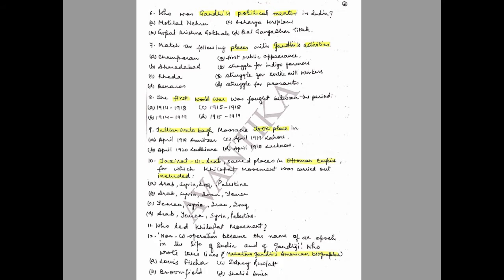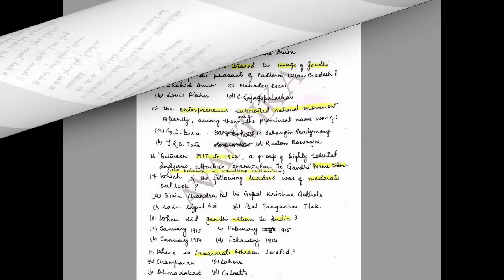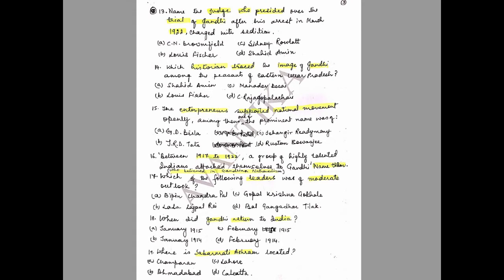Question 12: 'Non-cooperation became the name of an epoch in the life of India and of Gandhi.' Who wrote these lines — Gandhi's American biographer? Options: A) Louis Fisher, B) Broomfield, C) Sydney Rowlatt, D) Shahid Amin. Question 13: Name the judge who presided over the trial of Gandhi after his arrest in March 1922 when charged with sedition. Options: A) C.N. Broomfield, B) Louis Fisher, C) Sydney Rowlatt, D) Shahid Amin.